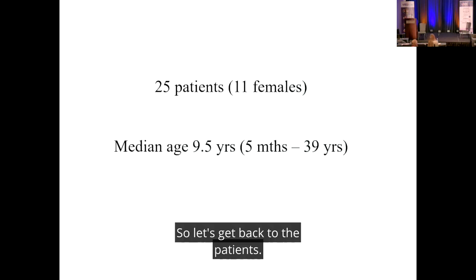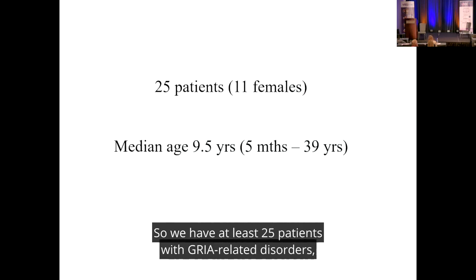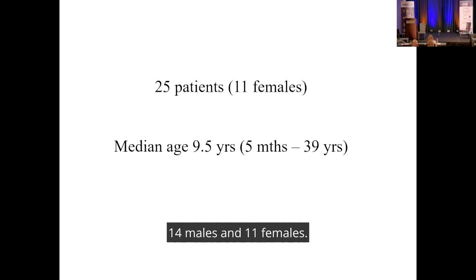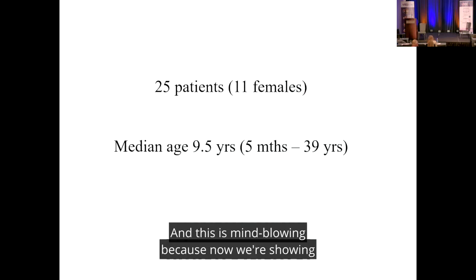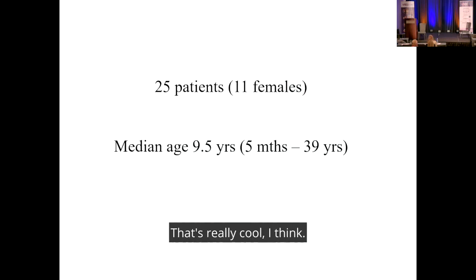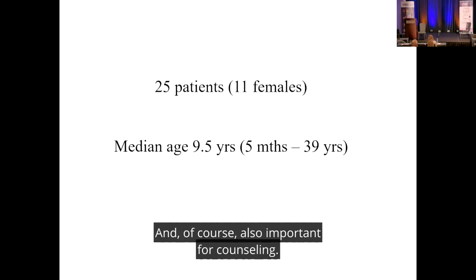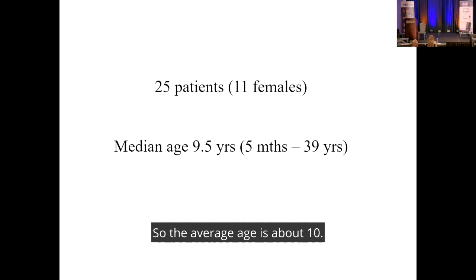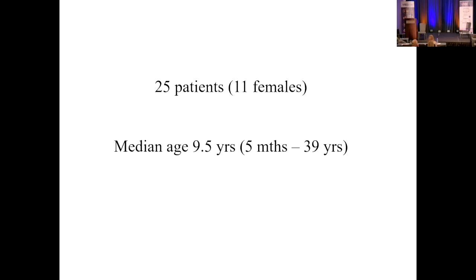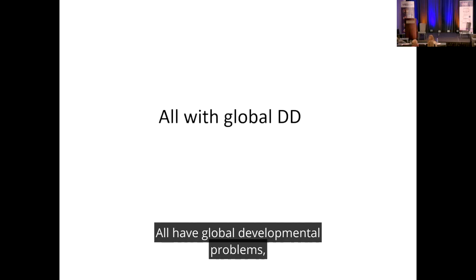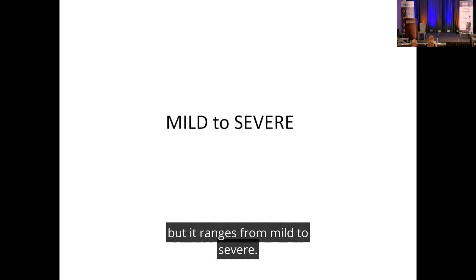We now have at least 25 patients with GRIA3-related disorders: 14 males and 11 females. This is remarkable because it demonstrates that many females can actually be significantly affected — important both for understanding the disorder and for genetic counseling. The majority are children, with an average age of about 10, though some adults in their 30s are also included. All have global developmental problems, ranging from mild to severe.